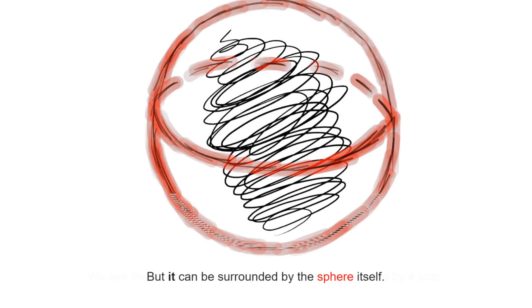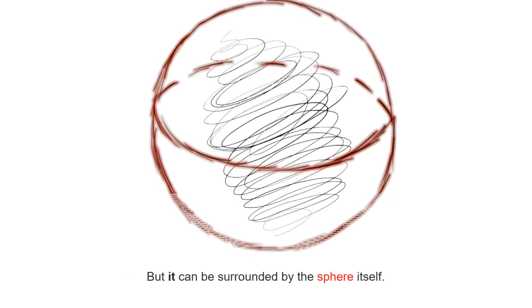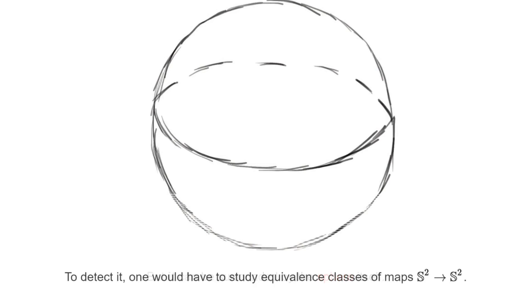What we should observe about this sphere is that it is the sphere itself, and not a loop, that is wrapped around the hole. If we want to detect this higher dimensional hole, we'll have to look at maps from the sphere to itself.